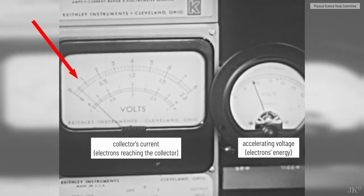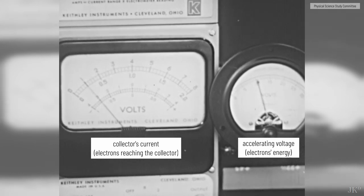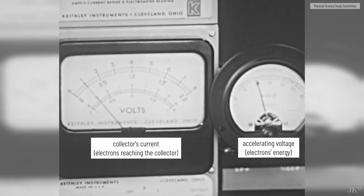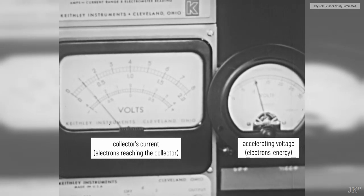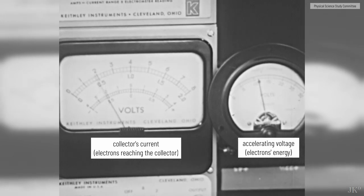Now then, as we increase the accelerating voltage, electrons are being accelerated between the grids more and more. There, something's happening. A drop in current. Something suddenly happened to the electrons so that they couldn't get across to the anode and be counted. But now, you also noticed that the current was beginning to increase as I stopped increasing accelerating voltage.